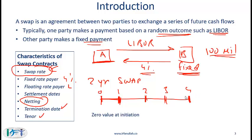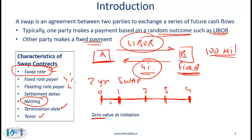The termination date is where the swap ends, and this overall period of the swap is called the tenor. Swaps start with a zero value at initiation, so the interest rates are set such that neither party is winning. The swap rate or fixed rate of 4% will be set based on expectations of LIBOR over this period. However, as we enter the swap, when interest rates change or become different from what was expected, the swap will have value.